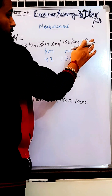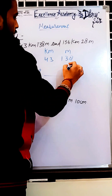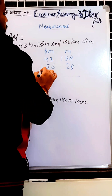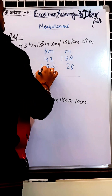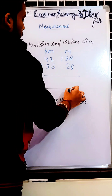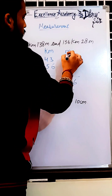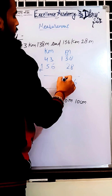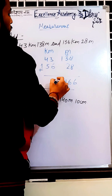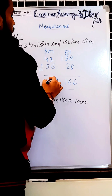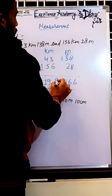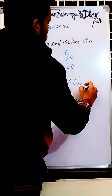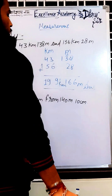Always write from the back. For the meter column: 138 and 28. For the kilometer column: 43 and 156. Adding: 8+8=16, write 6 carry 1; 1+3+2=6; 3+0=3. For kilometers: 3+6=9; 4+5=9; then 1. So the answer is 199 kilometer 166 meter.